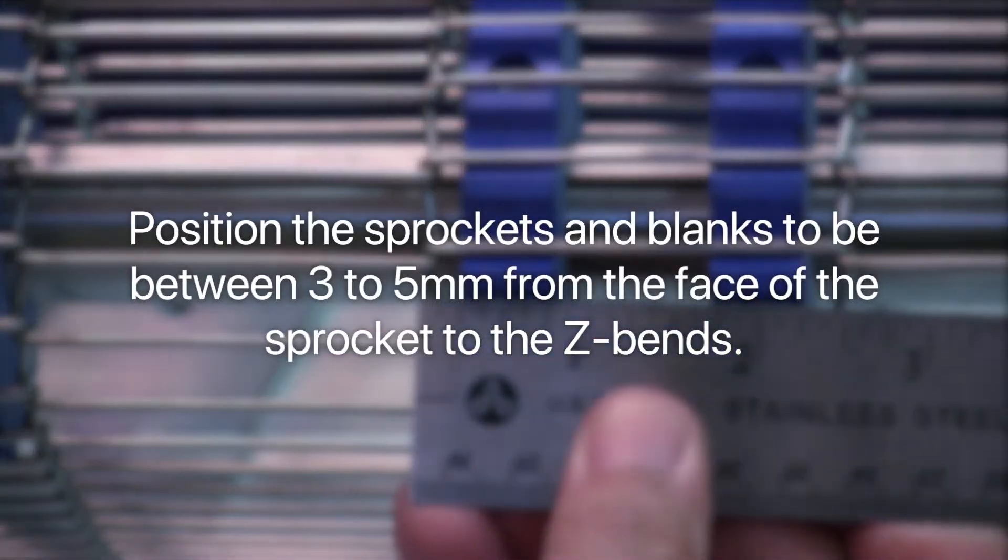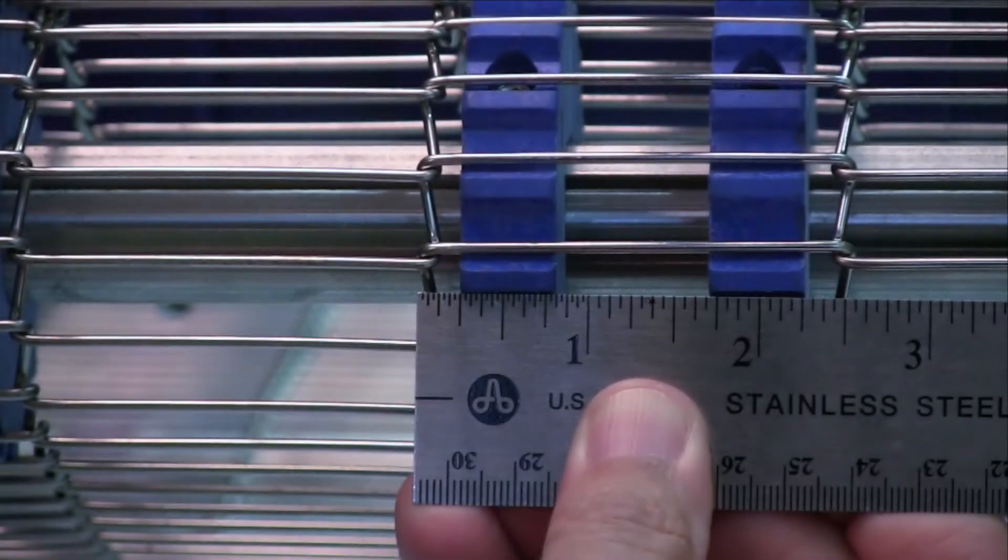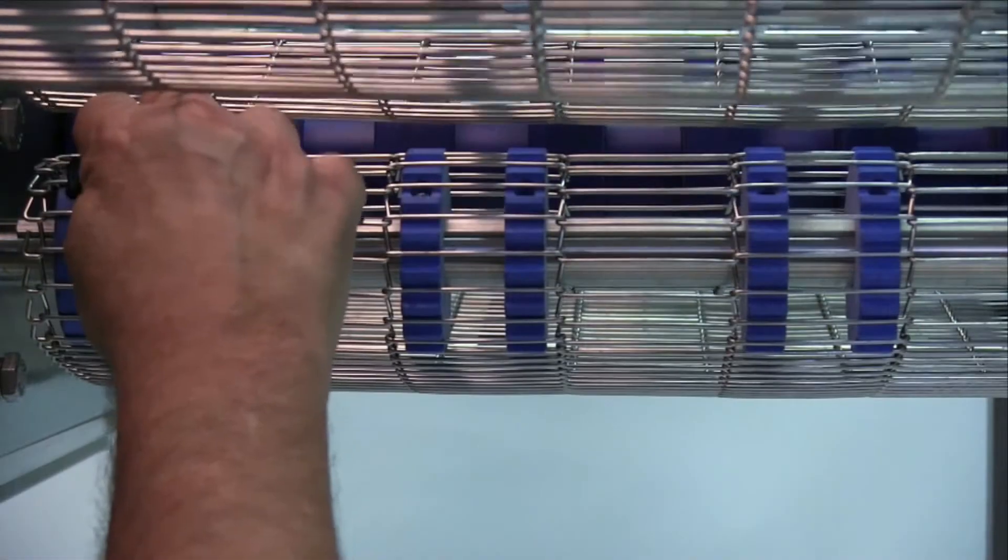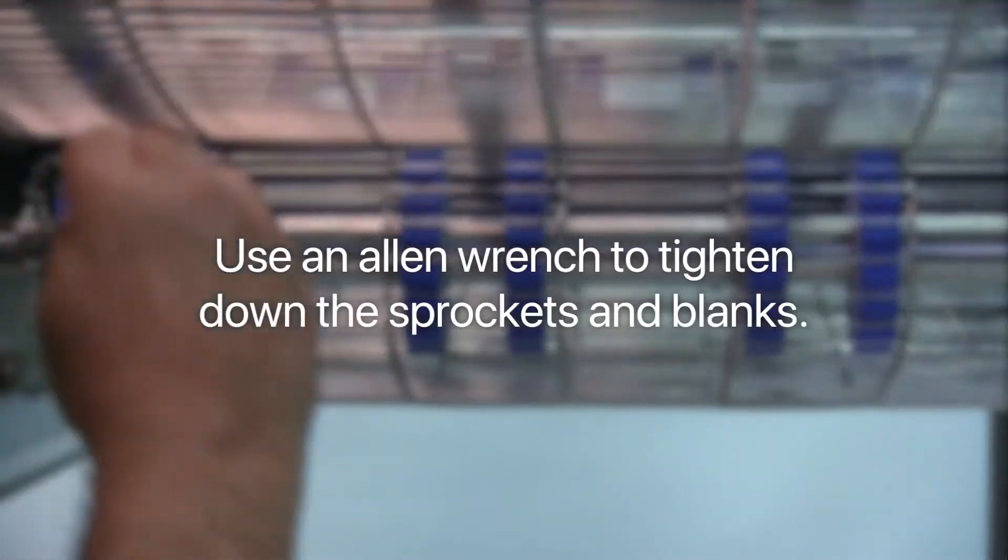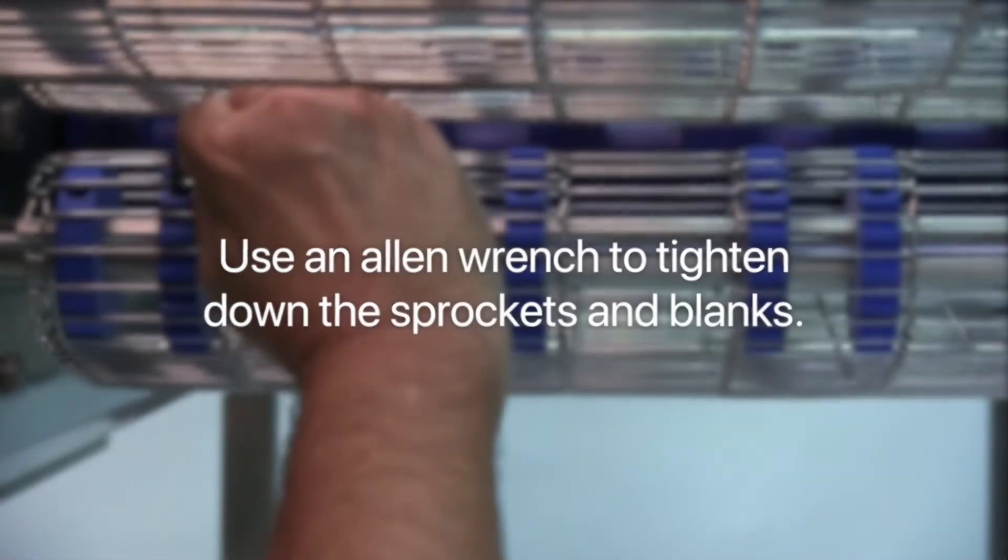Position the drive sprockets and blanks to be between 3 to 5mm from the face of the sprocket to the Z-bends. Use an Allen wrench to tighten down the sprockets and blanks.